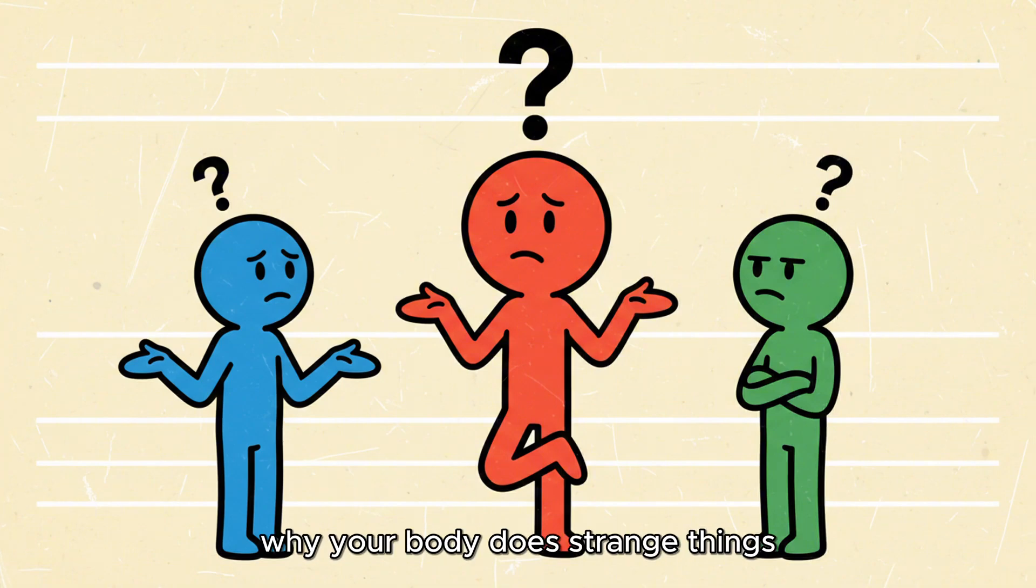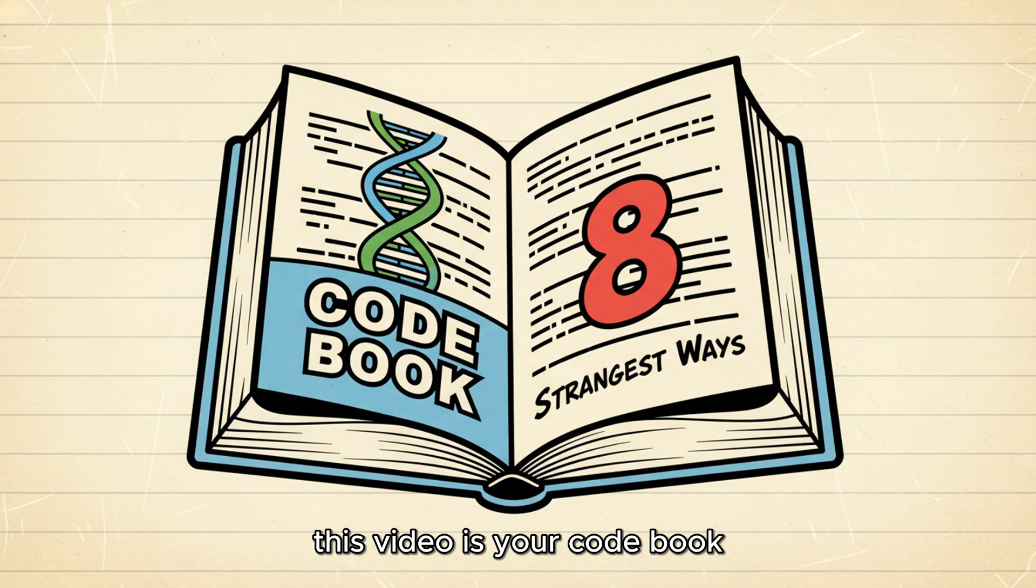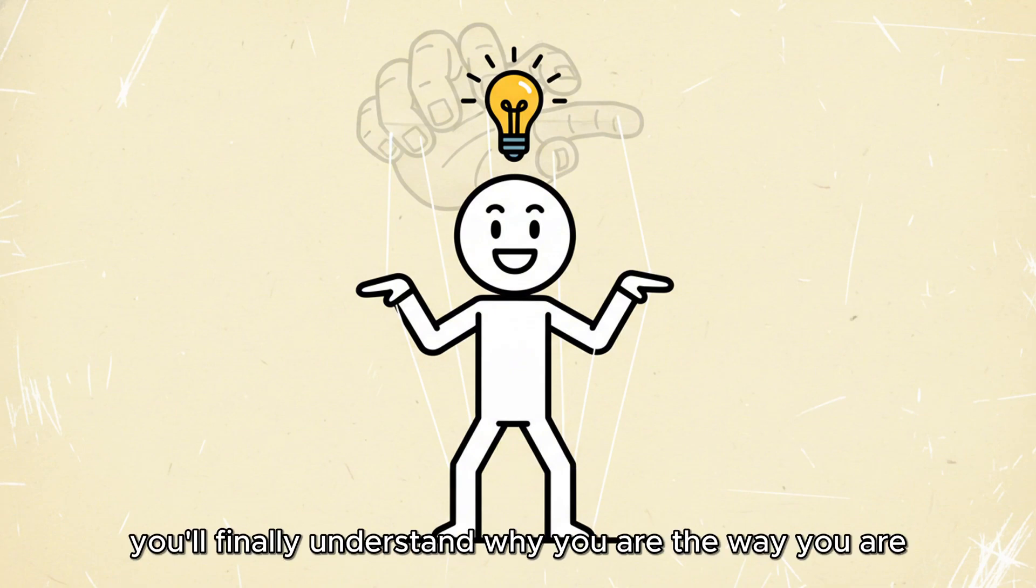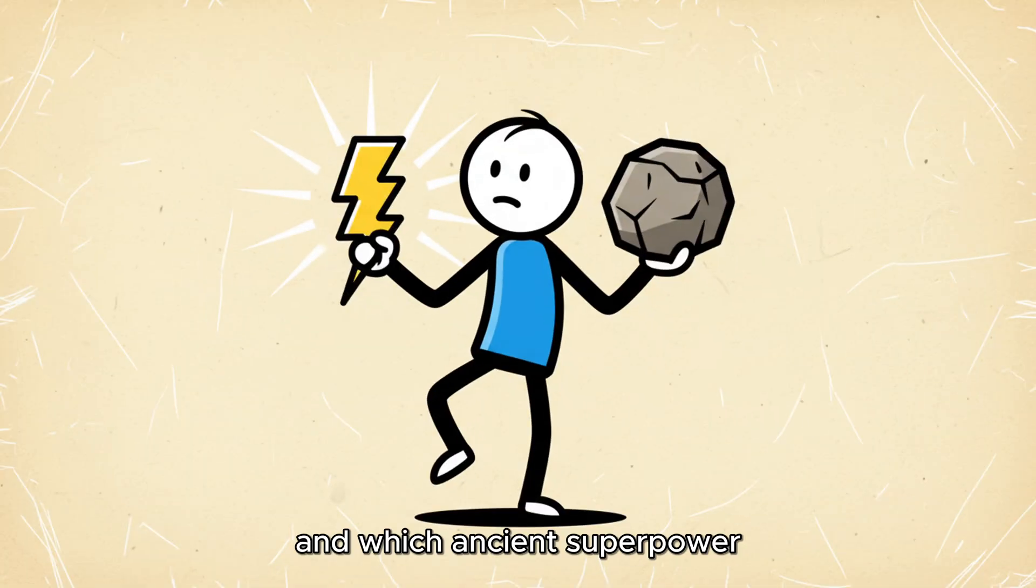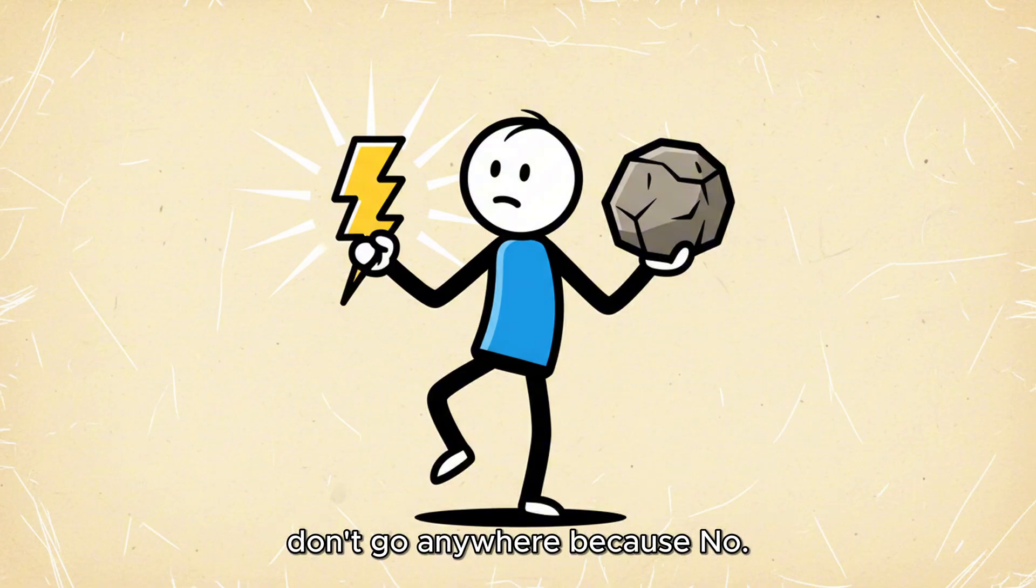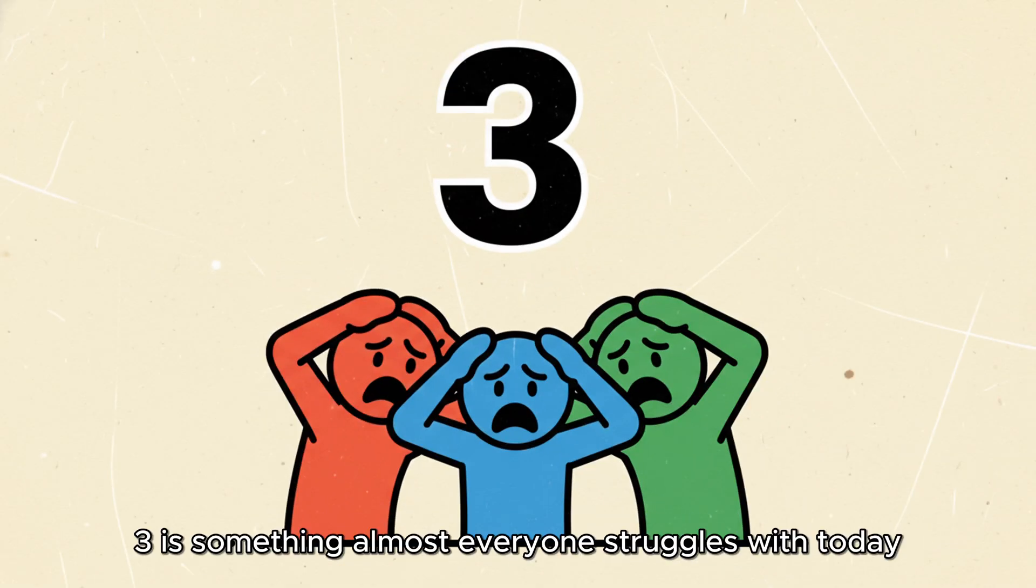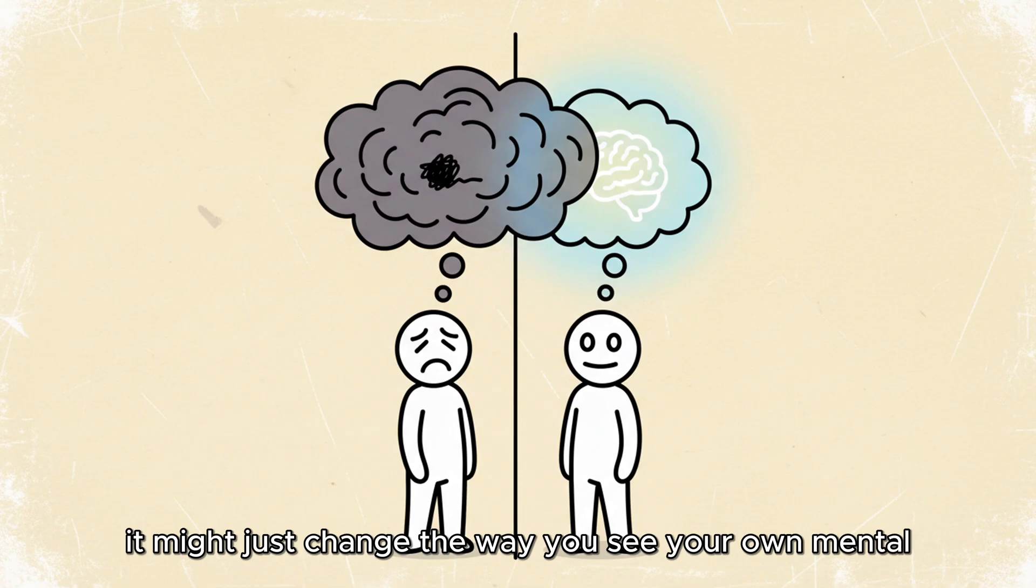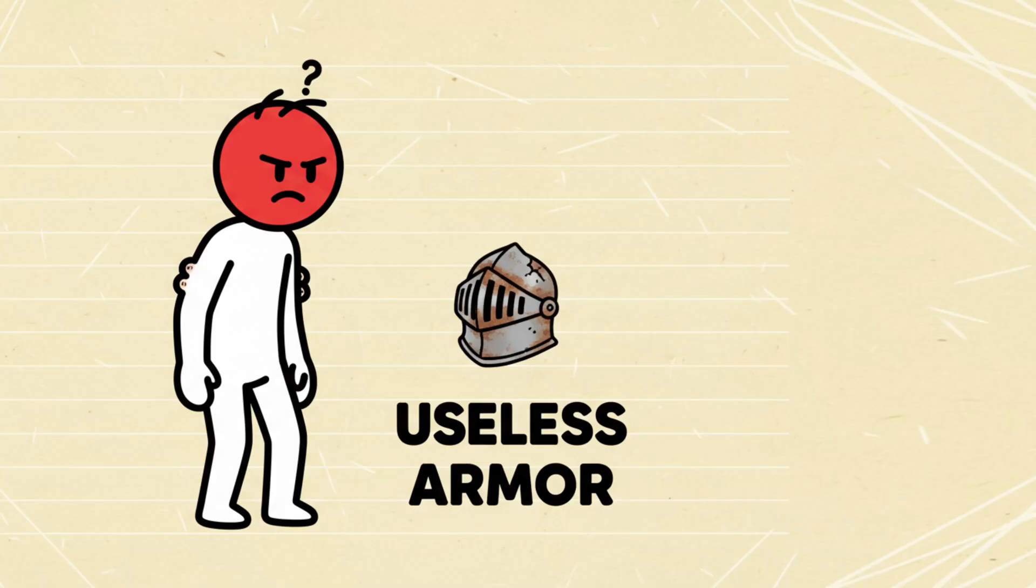If you've ever wondered why your body does strange things no one else seems to understand, this video is your codebook. We're diving into the 8 strangest ways your Neanderthal DNA is still controlling your modern life. By the end, you'll finally understand why you are the way you are, and which ancient superpower, or annoying handicap, you're carrying. Don't go anywhere, because number 3 is something almost everyone struggles with today, and it might just change the way you see your own mental health.